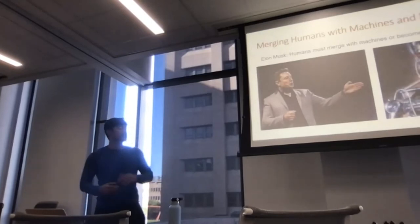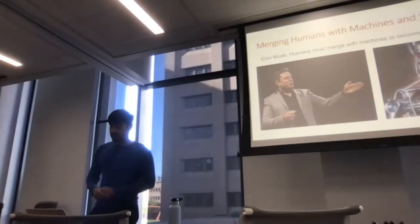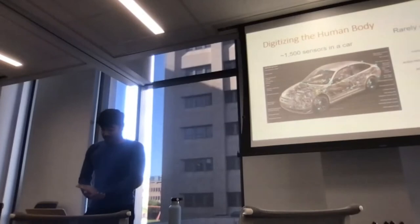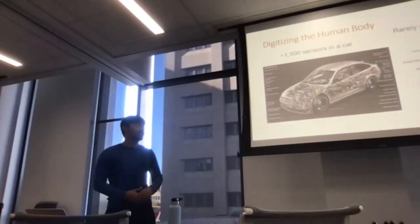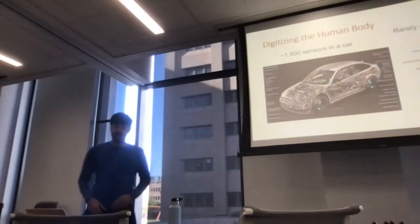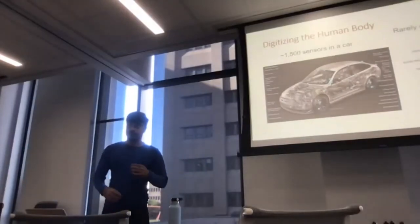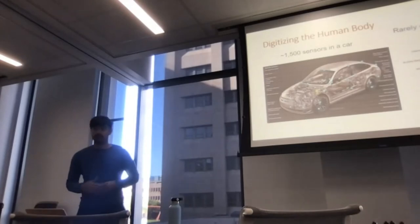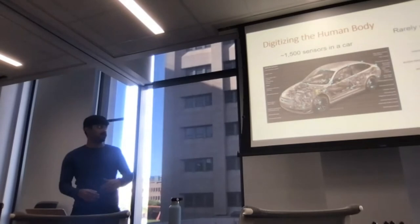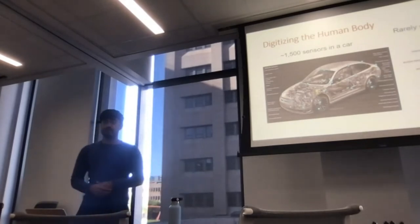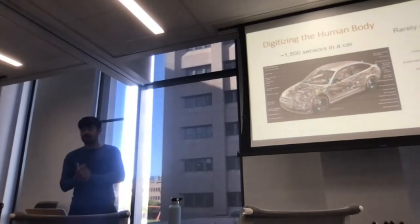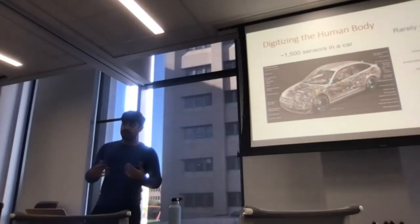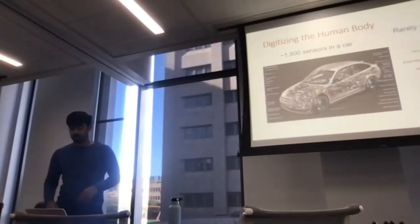As Elon Musk says, humans must merge with machines or become irrelevant in the age of AI. Any normal car — not a Tesla, a normal human-driver Ford — has more than 1500 sensors for things like fuel sensing, speed sensing, and temperature. But on a human body we don't really have sensors, even though our body is generating tons of data: motion data, EMG which is muscle activation data, pressure data from your feet, EEG, ECG, all the vital parameters you should monitor to get a holistic approach to body health.